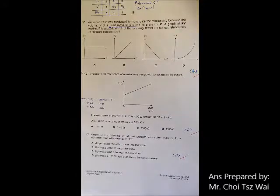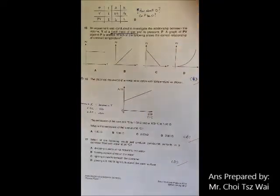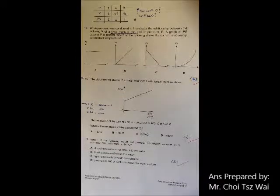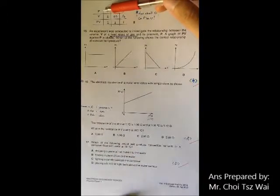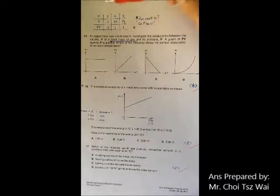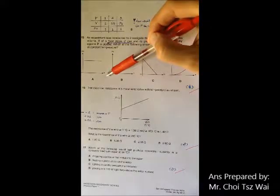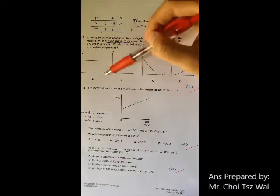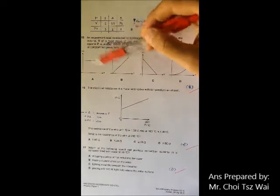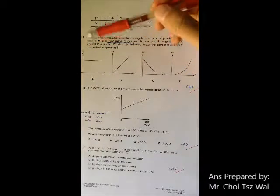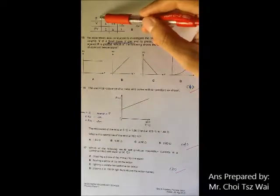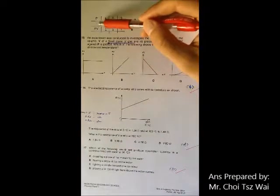Okay, question 15. Question 15 actually tests you on your ability to read your graph. For those who are less mathematic-inclined, what I would like to suggest you is that form a table like this. So how do you form this table? Because you are looking at the relationship between PV and P, that means you need to be able to tell how PV and P are changing. So I form here P, V, and PV.